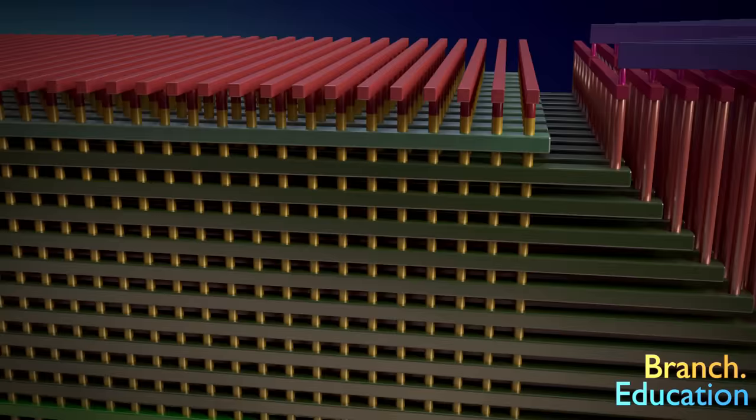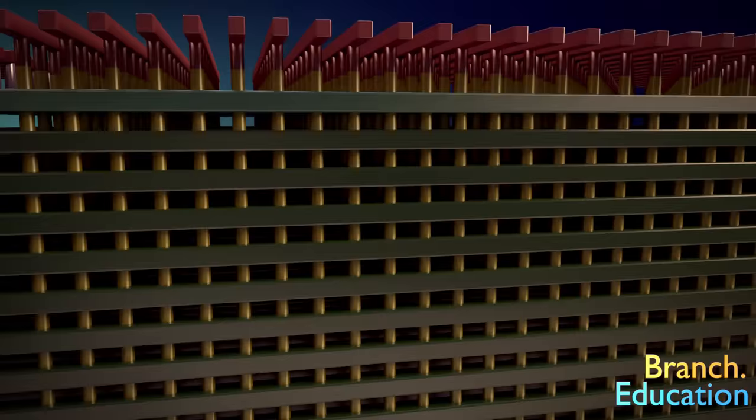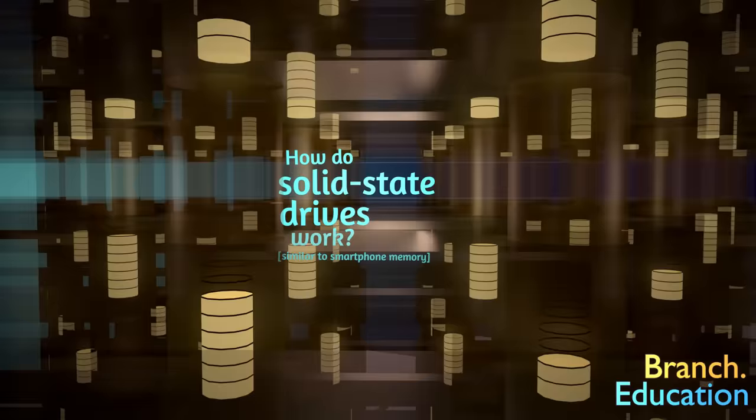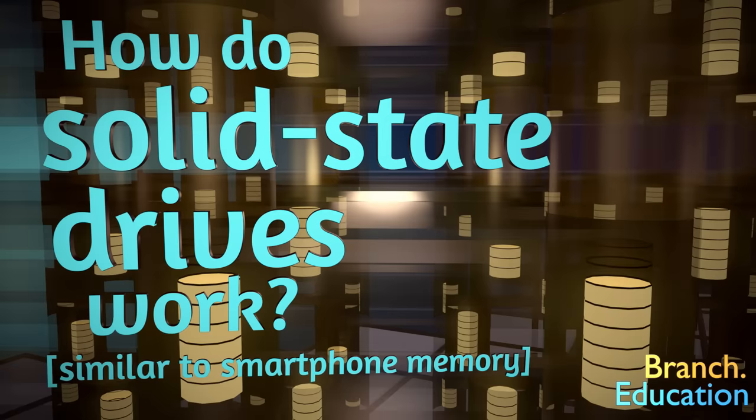Every picture, message, and bit of information gets saved as quantities of electrons inside these memory cells, which are called charge-trap flash. And in this episode, we'll learn how smartphone memory and solid-state drives work.